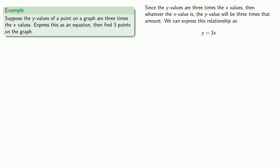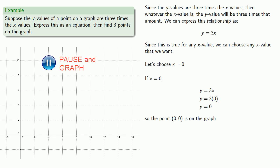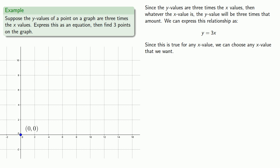Now to find three points on the graph, what I want to do is find three sets of x and y-values. Now I have this relationship y equals 3x. Since this is going to be true for any x-value, we can choose any x-value that we want. So let's choose x equals 0 as an easy value to work with. If x equals 0, then our formula tells us that y is equal to 0, and so the point 0, 0 is on the graph. Let's pick another value for x, let's choose x equals 1. If x equals 1, our formula tells us that y is equal to 3, so the point 1, 3 is also on the graph. And if I choose x equal to 2, our formula tells us that y is equal to 6, and so we know the point 2, 6 is on the graph.